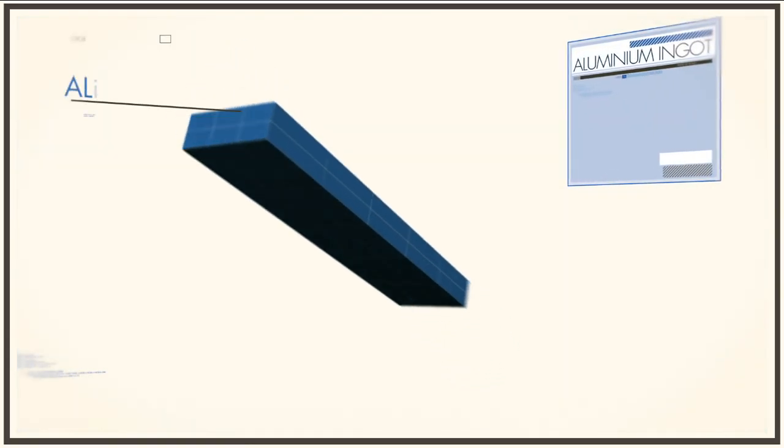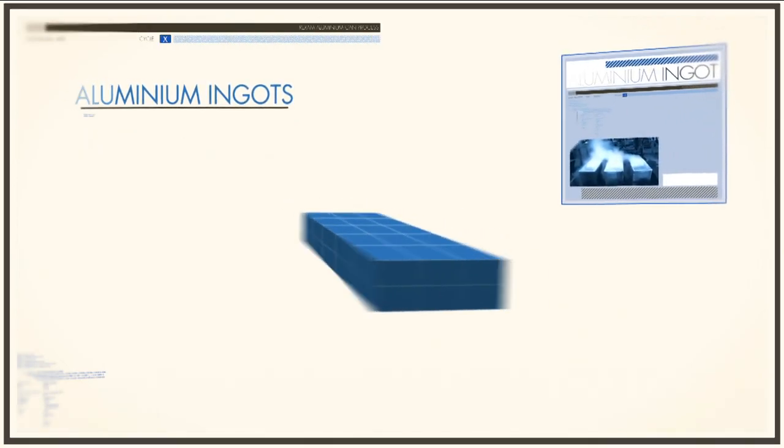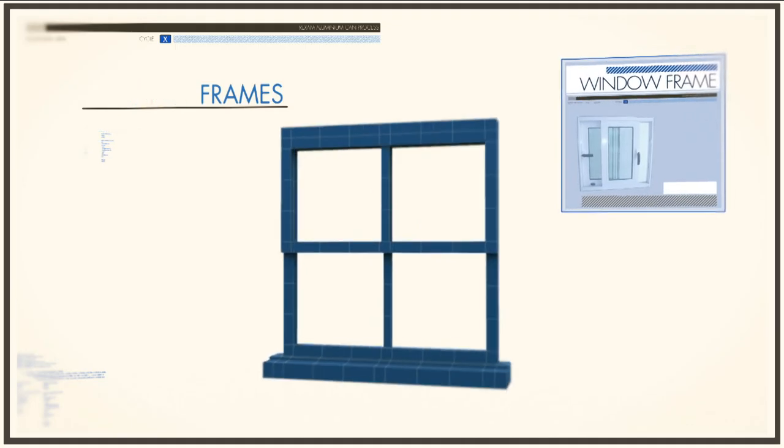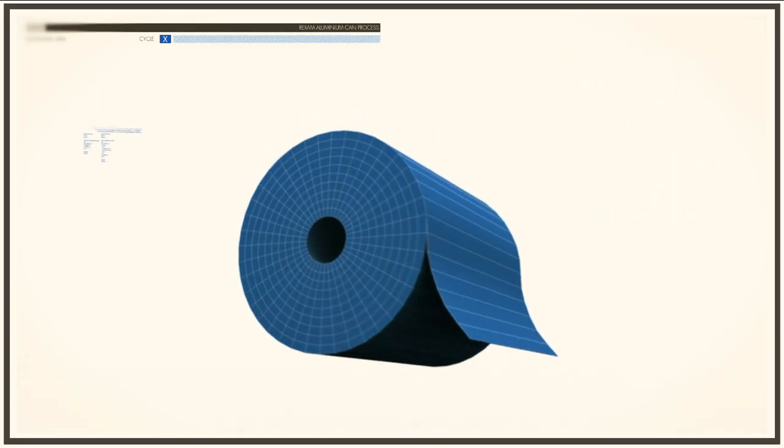The ingot can be turned into anything, from a window frame, to a part in your car, or even another roll of aluminium to make cans.